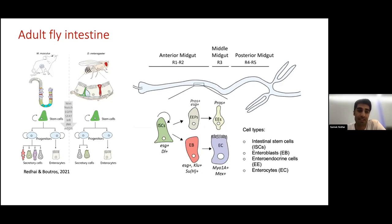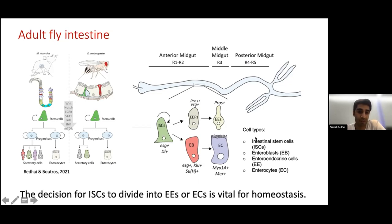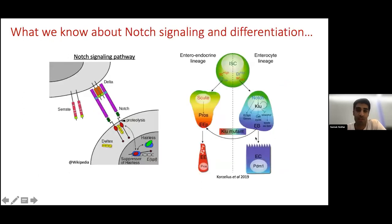Therefore, the decision that stem cells have to make — whether to divide into enteroendocrine cells or enterocytes — is an important one for maintaining homeostasis. Work from a number of groups has shown that the notch pathway is important for the differentiation of intestinal stem cells.